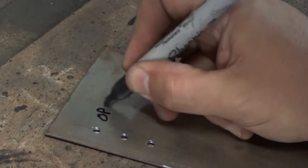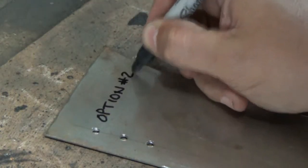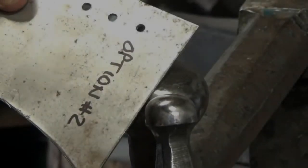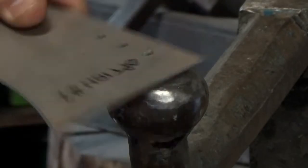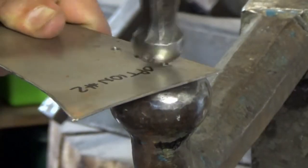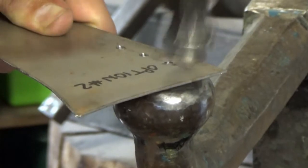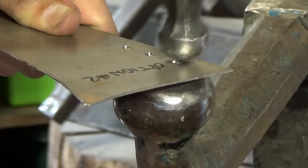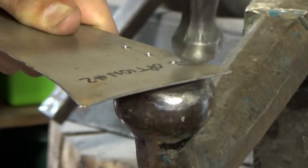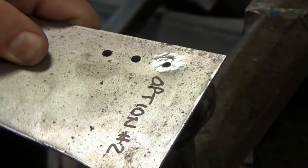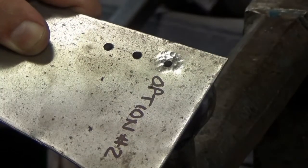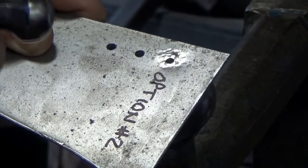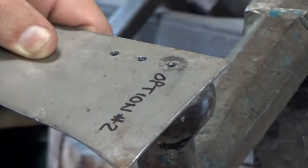Option two is to close the hole down by hammering around the outside and slowly shrinking down the sides of the hole. So you start off by working around the outside of the hole, drawing some of that material and you can see we've already shrunk it down by about a millimeter. It does have the added distraction though of thinning the material around the hole.